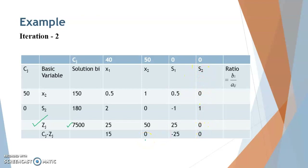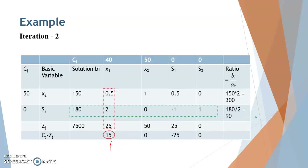Test for optimality again. Since not all values are less than or equal to 0 — there is still a positive value — and 15 is the largest positive value, X1 is now the incoming variable. Calculate replacement ratios by dividing each Bi by the corresponding key column element: 150 divided by 0.5 gives 300, and 180 divided by 2 gives 90. Select the least positive ratio, which is 90, so S2 is the outgoing variable, its row is the key row, and the key element at their intersection is 2.